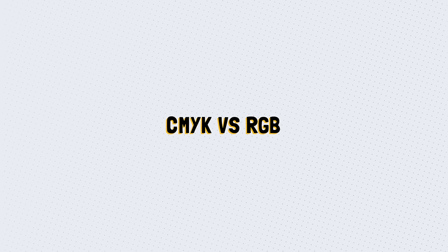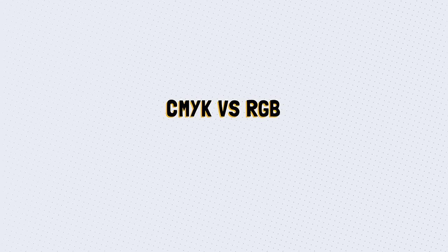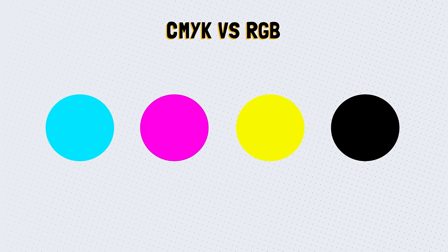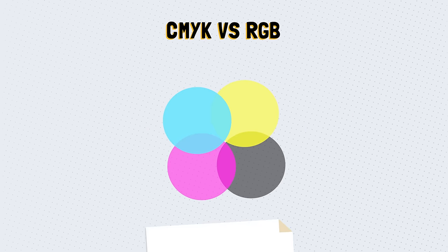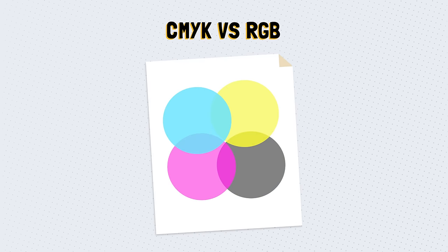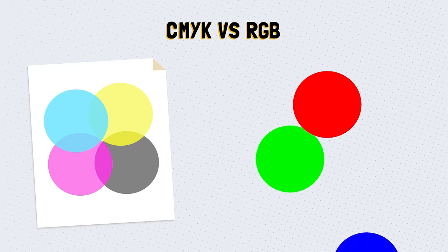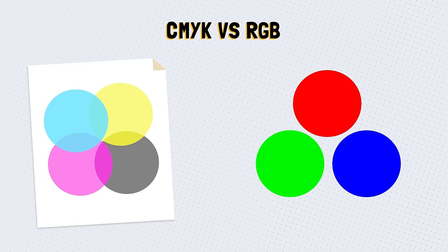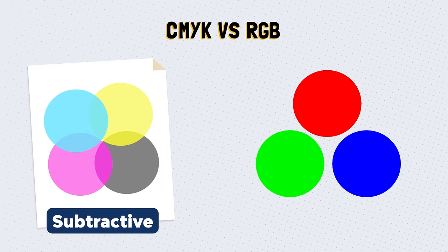What is the difference between CMYK and RGB? CMYK stands for cyan, magenta, yellow, and K for key or black. These are the four most basic colors you can use for printing. You will notice CMYK colors aren't as vibrant as RGB, and this is because CMYK is subtractive — meaning that the colors work with the reflected light.